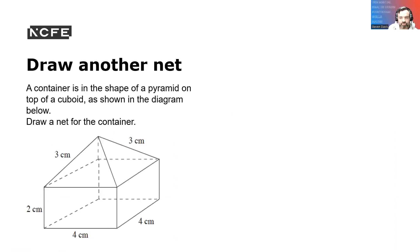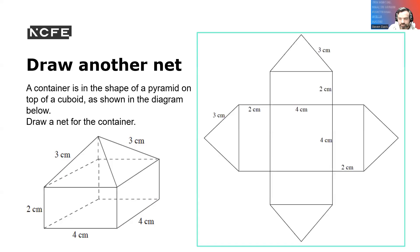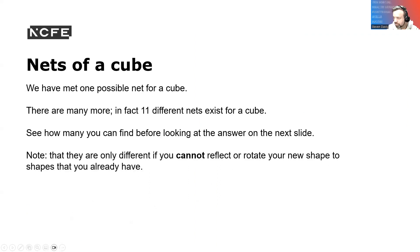If we were to draw another net, this contains the shape of a pyramid on the top of a cuboid shown in the diagram below. If you wanted to draw this, you've got your sides there. There's your base and there's your top. Again, you would need to know these figures here to be able to draw that for it to come up.